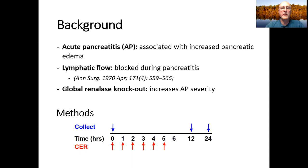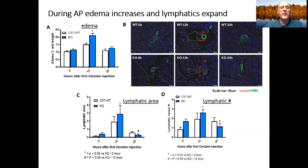If you look at the bottom of the slide, you will see our schematic for how we induce pancreatitis and when we collected samples. In our first slide, under A, we looked at pancreatic edema by wet weight and showed that by 12 hours there is an increase in edema in the wild-type animals in white as well as in the knockouts, which is more severe.